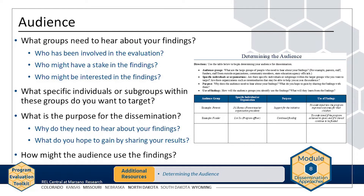Next, consider the purpose for disseminating information to each of the groups or individuals on your list. Why do they need to hear about your findings? You should also think about how informing this group may benefit you — what do you hope to gain by sharing your findings? For example, dissemination to funding groups may make it easier to procure funding in the future. Finally, think about what the groups or individuals will do with the findings and what they will learn. Identifying the intended audience is not a linear process — don't be afraid to continually revise and rethink your audience.